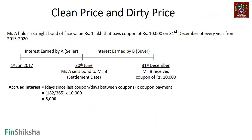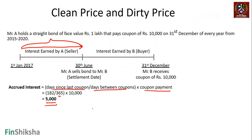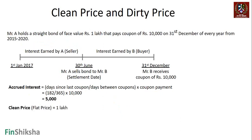The accrued interest is the interest the bond has already earned by virtue of being held by person A over those six months — that's 5,000 rupees. The formula is: days since last coupon divided by days between coupons, multiplied by the coupon payment. If selling after three months, it would be 90/365 × 10,000, giving approximately 2,500. That is the accrued interest, and it should be embedded in the transaction price.